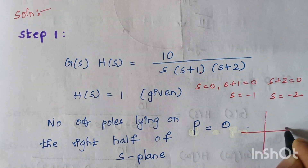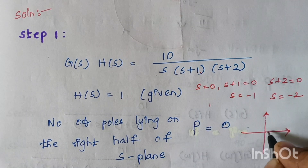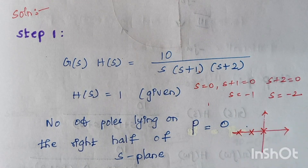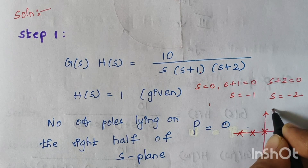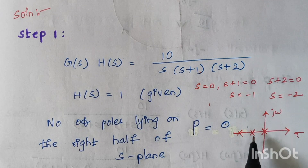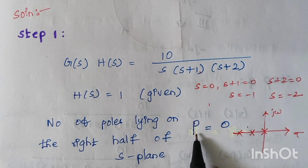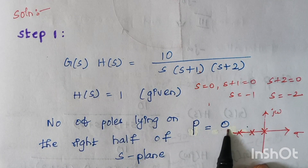Looking at the S-plane: the value S equals zero lies at the origin, minus 1 lies here, and minus 2 lies here. This is the real axis and this is the imaginary axis. No poles are lying on the right hand side — all poles lie on the left hand side or at the origin. So the number of poles on the right hand side of the S-plane is zero.